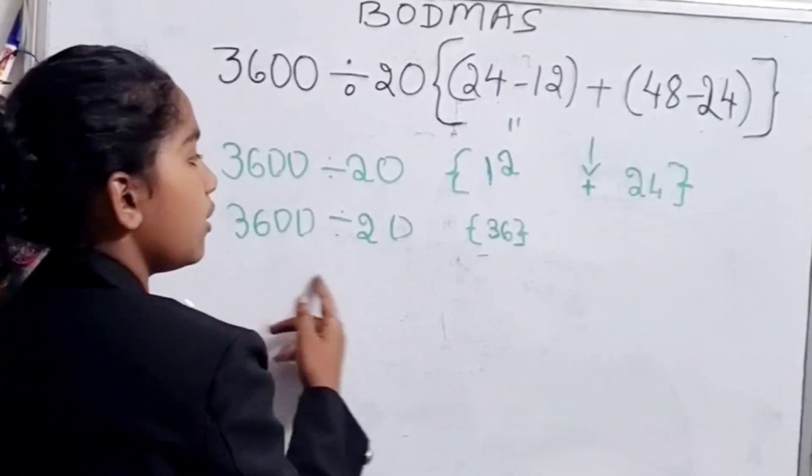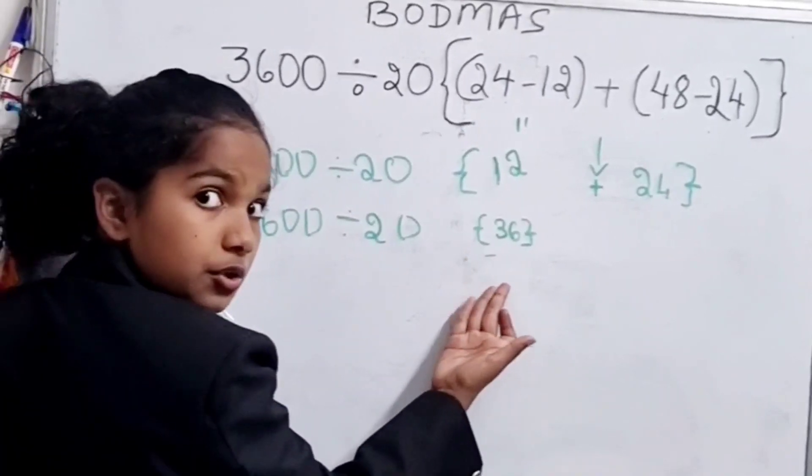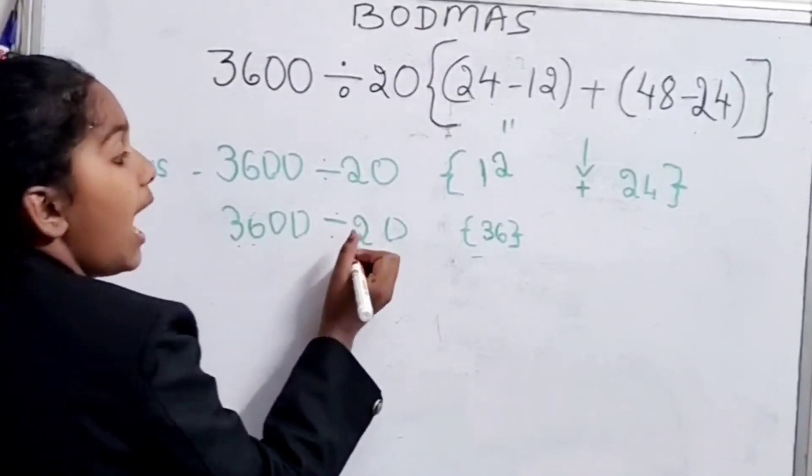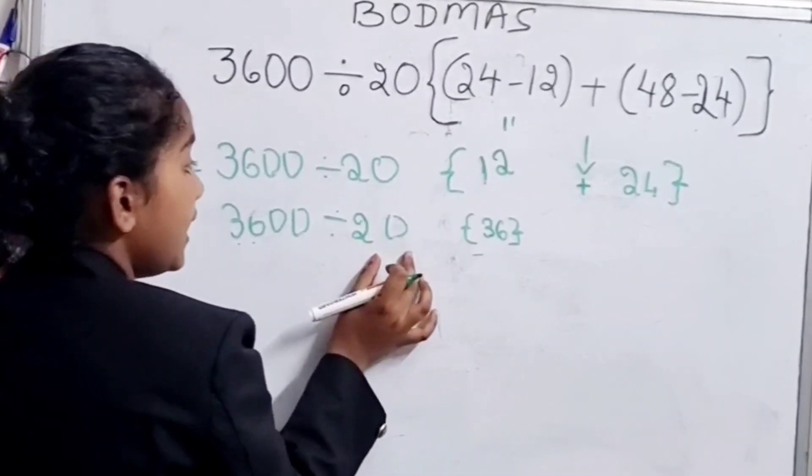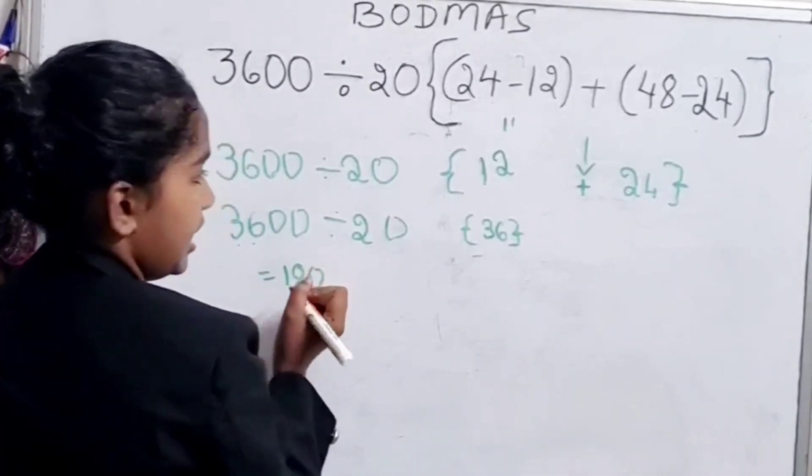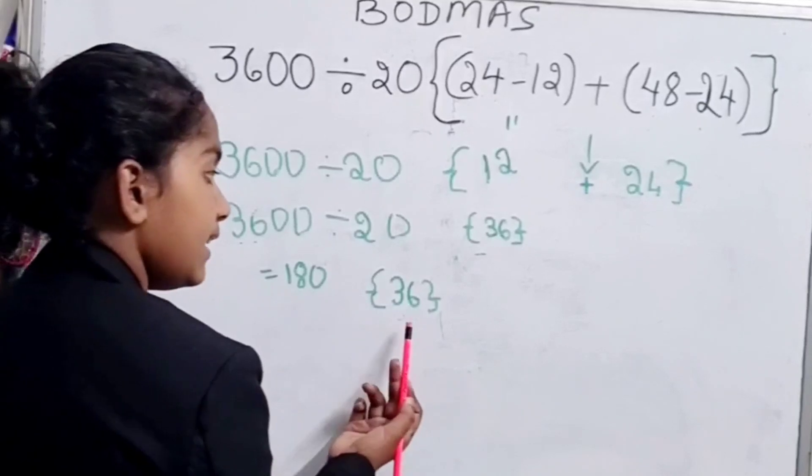Now we can write this sum as it is again. Now we can go with the division. As there is nothing you can do with the brackets, we will go with division. So 3600 divided by 20. We know this will be 180.